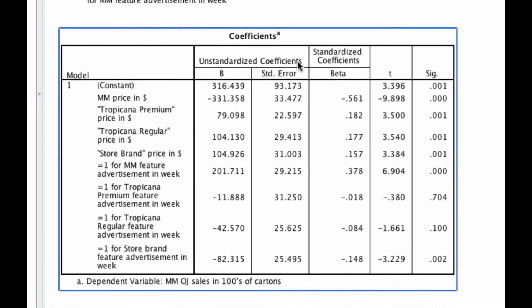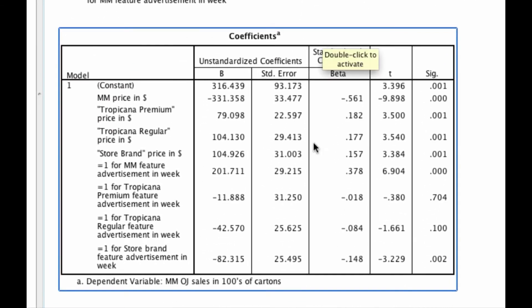And if I scroll down to my output, to my coefficients, I see that there's quite a bit of influence of advertising. For instance, when my company, when Minute Maid advertises, I get an increase in sales. That's significant. And so this seems like advertising is actually pretty effective. We also see that there's some variation in the degree to which my competitors' advertising influences my own sales.